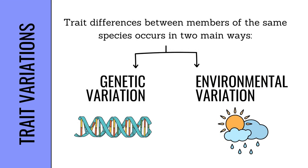Trait differences between members of the same species occur in two main ways: genetic variation and environmental variation.